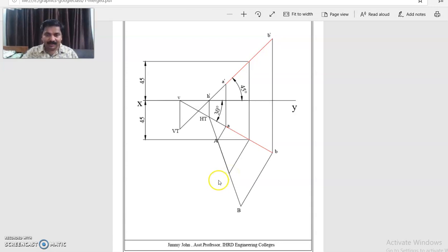This capital M is the midpoint of true length. So naturally, A and B will be at equal distance from M. That is 40mm. So M A is equal to 40mm. Capital M B is equal to 40mm. So that AB is equal to 80mm.